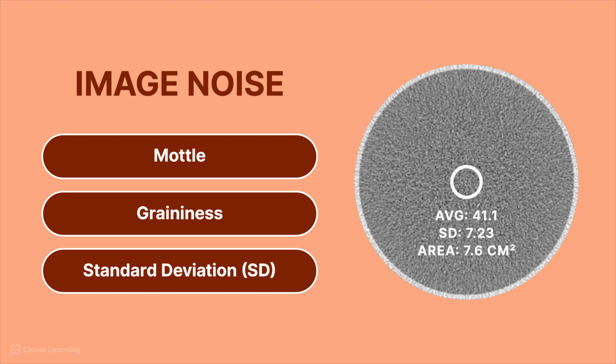If we place the ROI over this homogenous phantom, we get several numbers, including the average CT number, the standard deviation of the CT numbers, and the area of the CT numbers. If we're talking about image noise, the number that we're concerned with is the standard deviation.